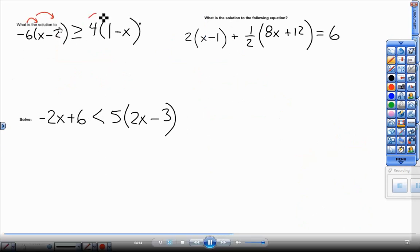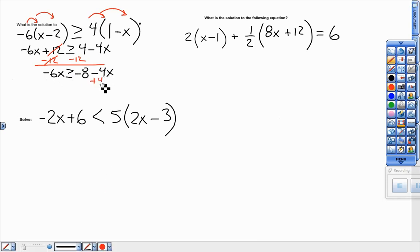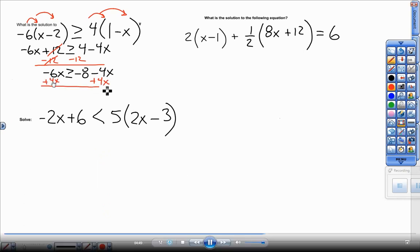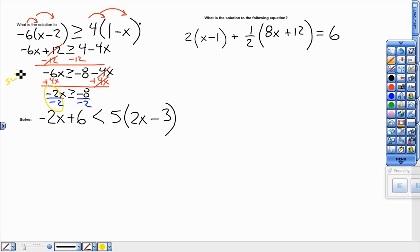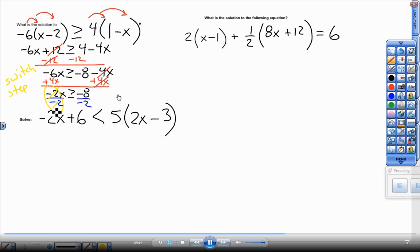Alright, for this, double distribute. Negative 6 times X is going to be negative 6X. Negative 6 times negative 2, positive 12. More than or equal to 4 minus 4X. Stay on this side. Minus the 12 to both sides. Get rid of the plain number on the left. Don't subtract 12 from negative 4X. Bring down negative 6X more than or equal to negative 8 minus 4X. Stay over here. Add 4X to both sides. Plus 4X plus 4X. These will cancel. This gives me negative 2X. Use your calculator. More than or equal to negative 8. Opposite timesing by negative 2. Dividing by negative 2. That flips my inequality around. Gets the X all by itself. Inequality is going to be switching from more than to the less than direction. So, X is less than or equal to positive 4.